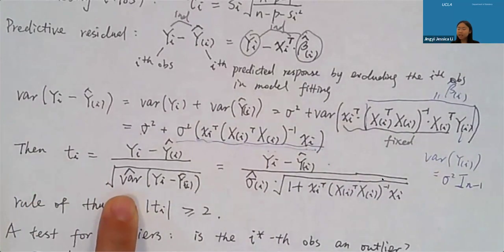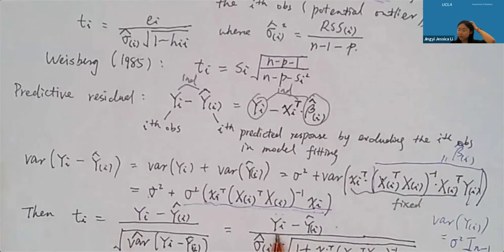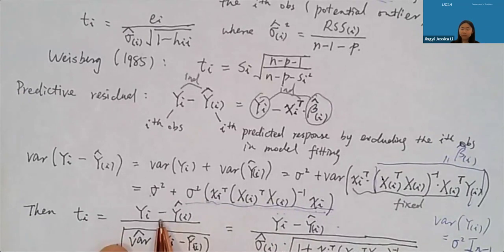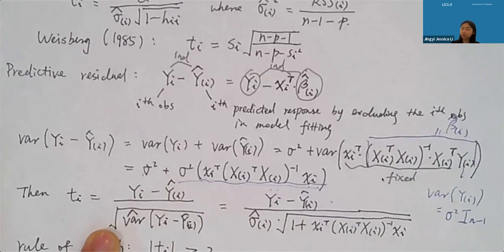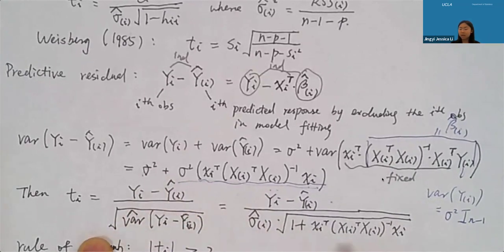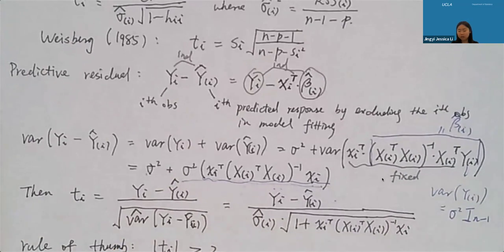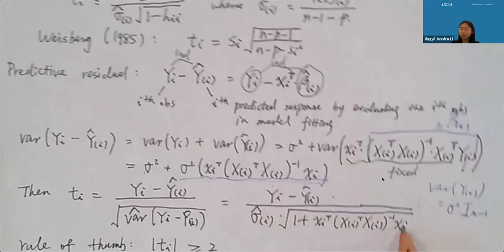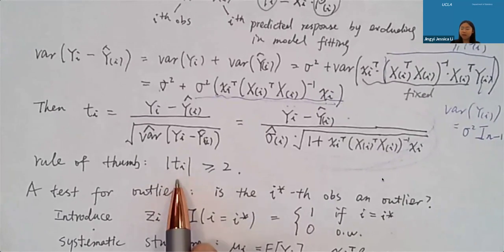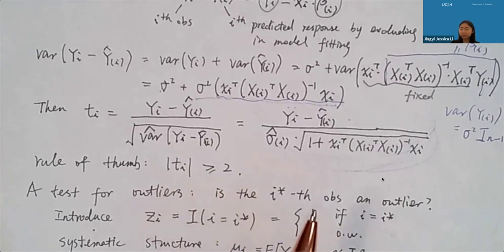The jackknife residual t_i can be defined using the predictive residual divided by its standard error, with sigma_hat_i plugged in. So observation i is excluded from both the sigma estimation and the residual definition. The rule of thumb: if |t_i| > 2, flag it as a potential outlier, since t_i approximately follows a standard normal distribution.